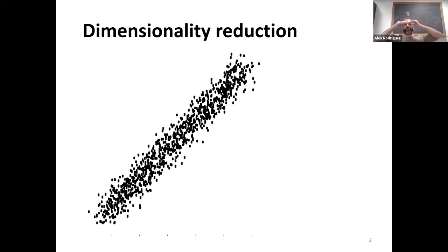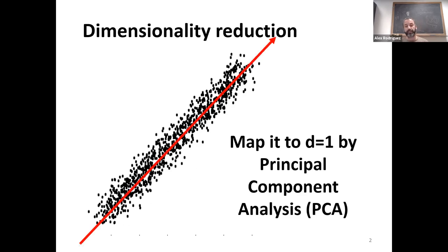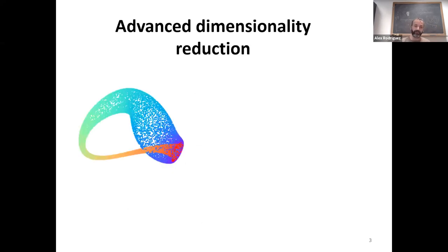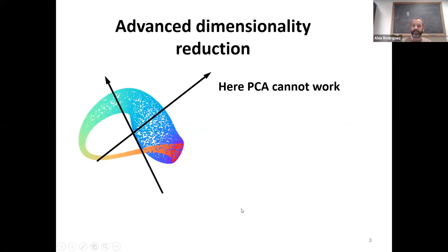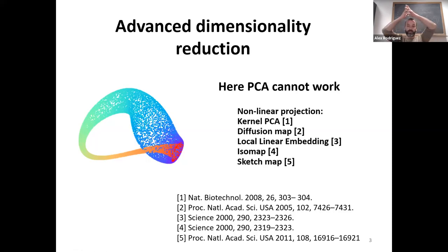In the first two lectures we talked about dimensionality reduction. If your points lie on a simple structure you can map them to 1D easily using PCA, but if your manifold is more complex, PCA cannot work because it performs a rotation of the space trying to obtain the maximum variance directions. If the manifold is curved, that rotation is useless. So we introduced other methods that can deal with these kinds of problems.